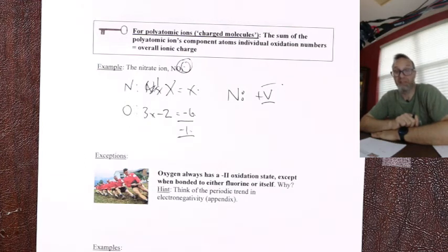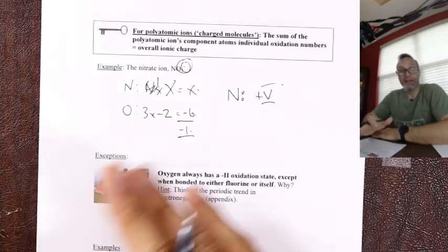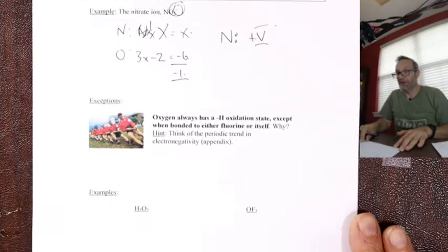When you have a molecular ion, the sum of the oxidation states equals the overall charge of the ion. When it's a molecule, the overall charge is zero, so it adds up to zero. That's how it works 99% of the time.